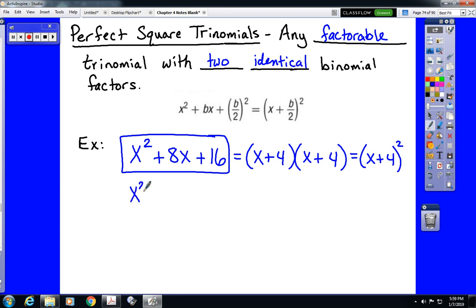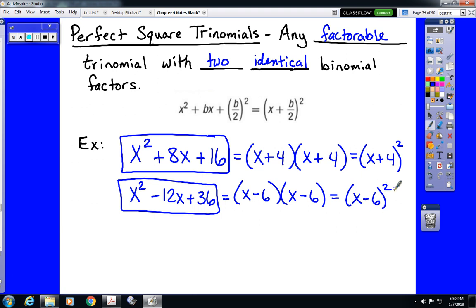So let's look at a few others. If we had x squared minus 12x plus 36, that would be a perfect square trinomial, because it would factor into two binomial factors. The numbers that multiply to 36 and add to negative 12 are both negative 6s. So that would factor into x minus 6 quantity squared, making that a perfect square trinomial.